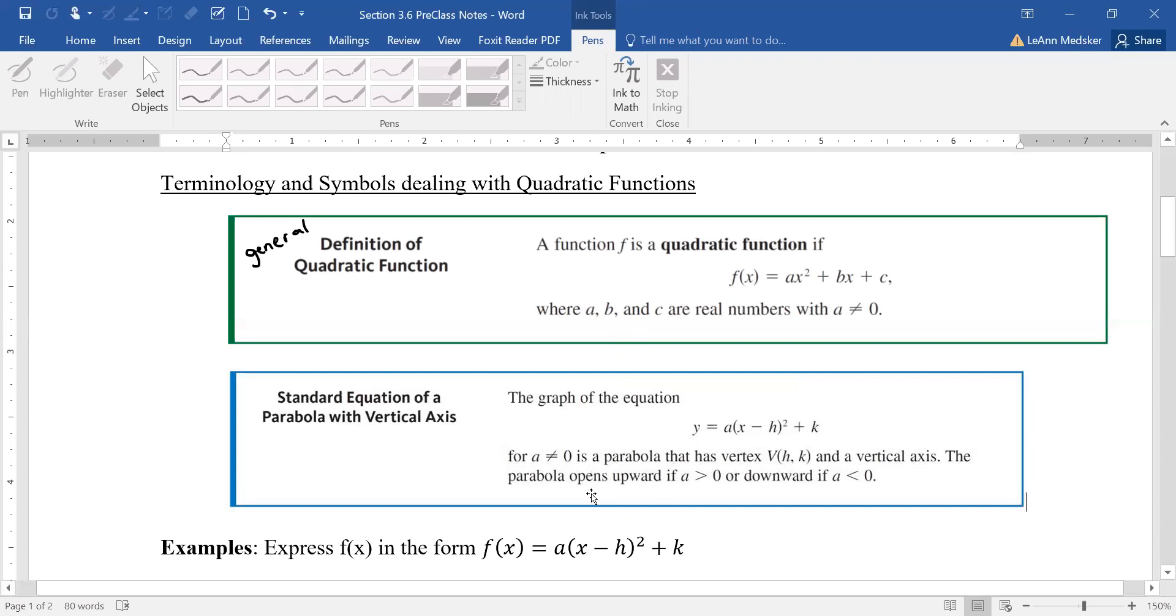And then you can determine if your parabola u-shaped graph opens either up or down if a is positive or a is negative. So if your a is positive you have a regular shaped u graph. If your a is negative that's a reflection so you have an upside down u.